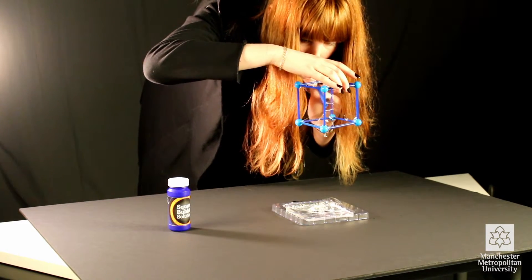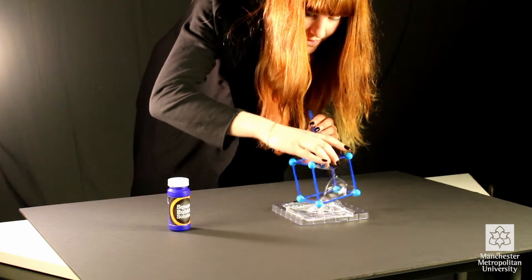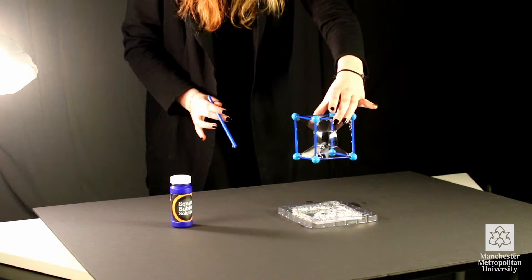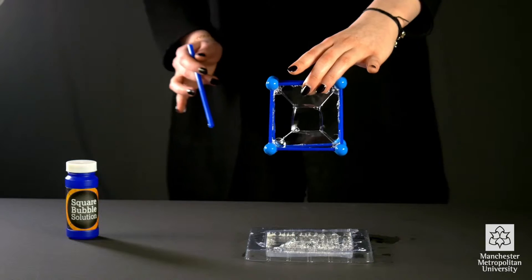To understand how a square bubble is made, you need to understand how a round bubble is formed. Regular bubbles use minimum amount of surface area to make sure that the air stays inside.